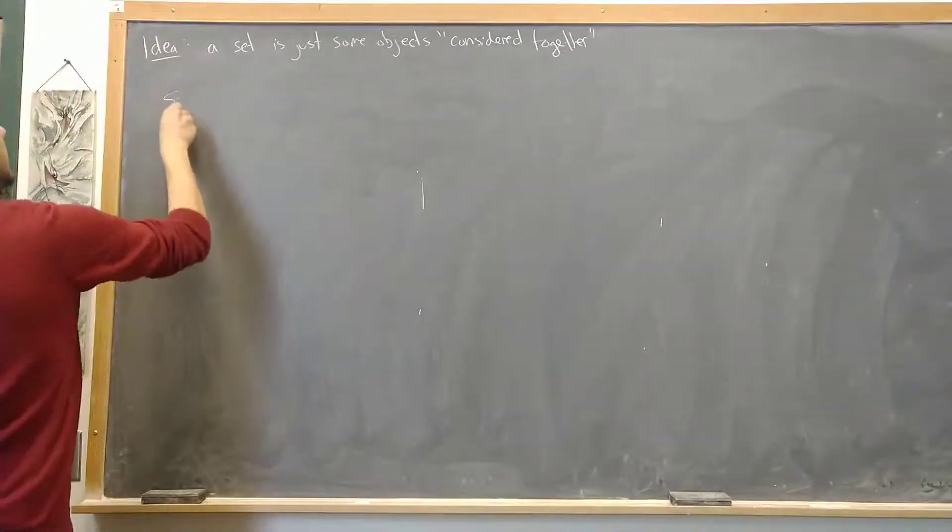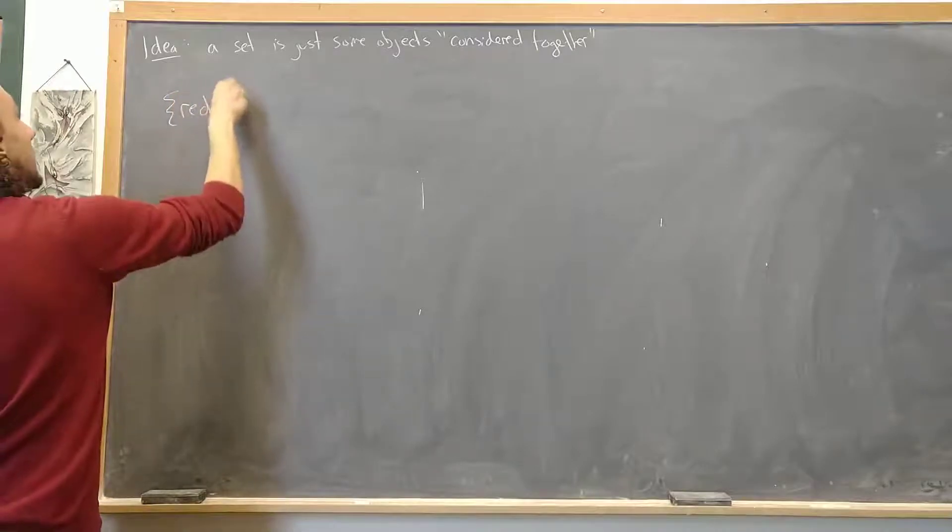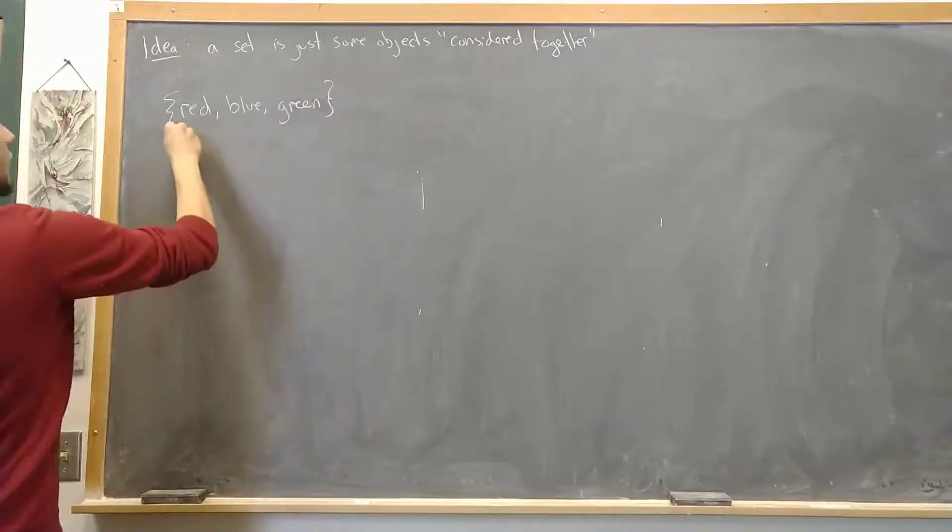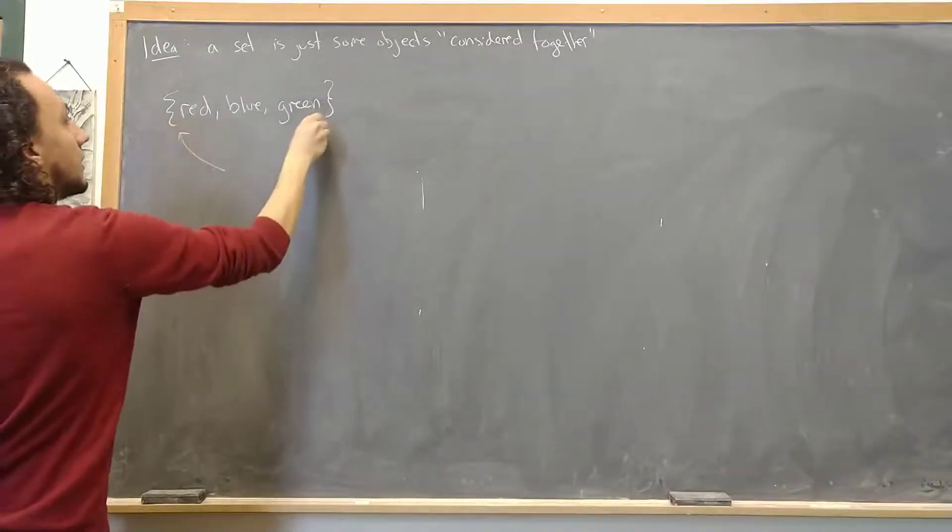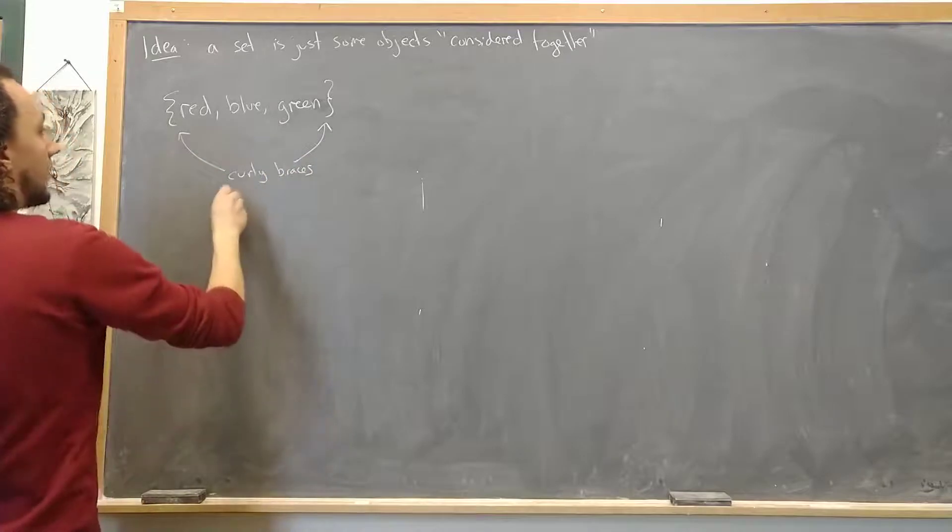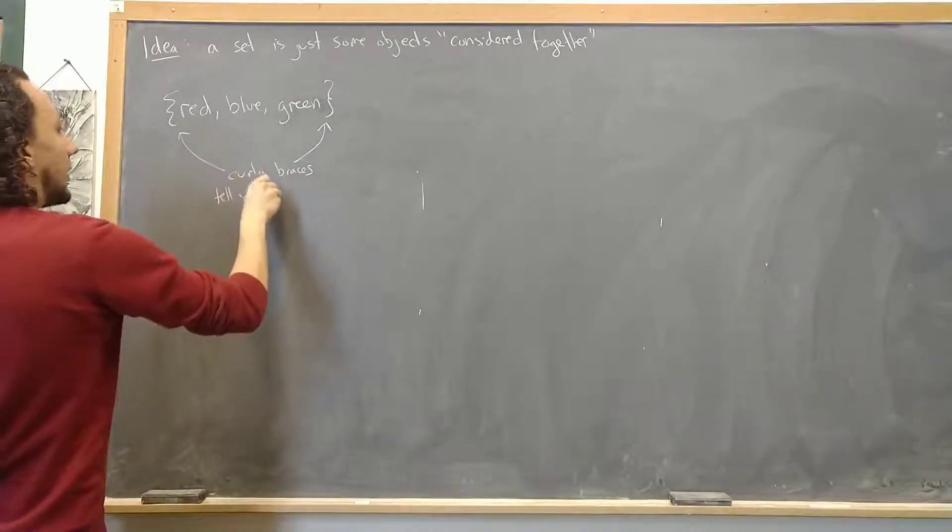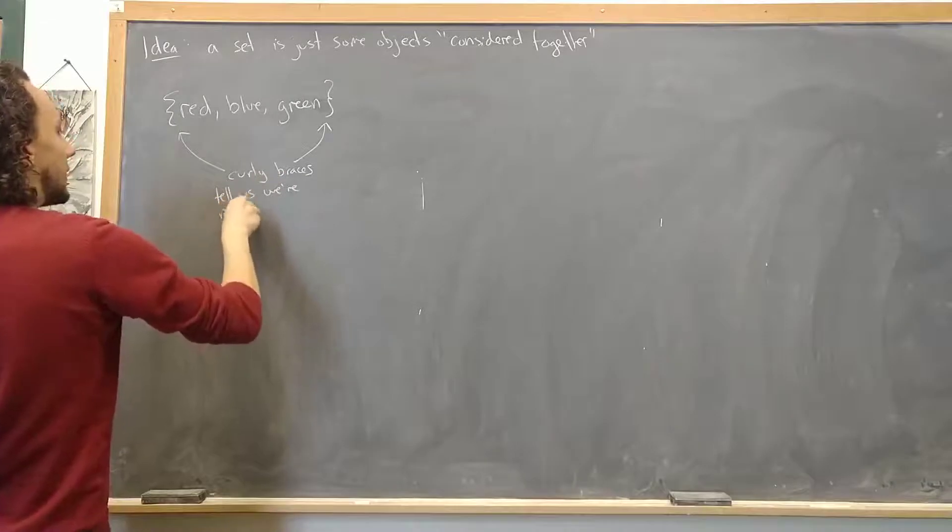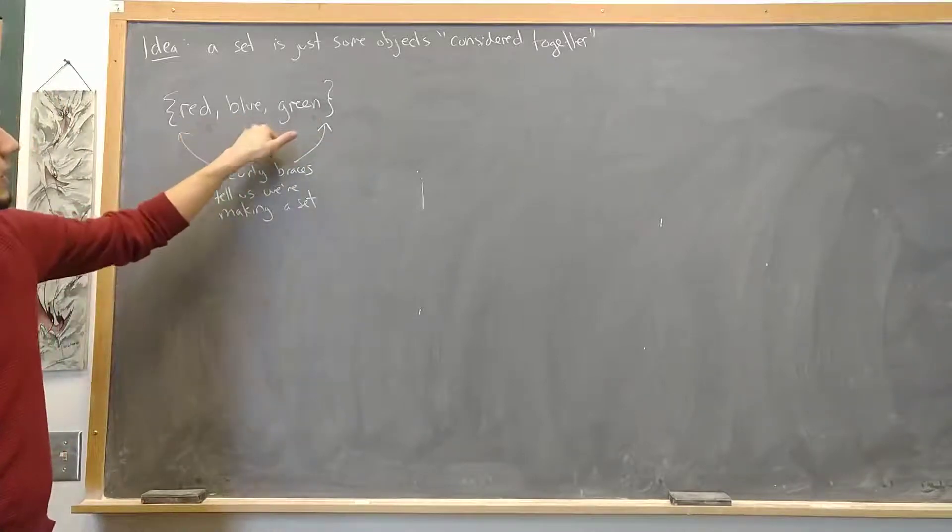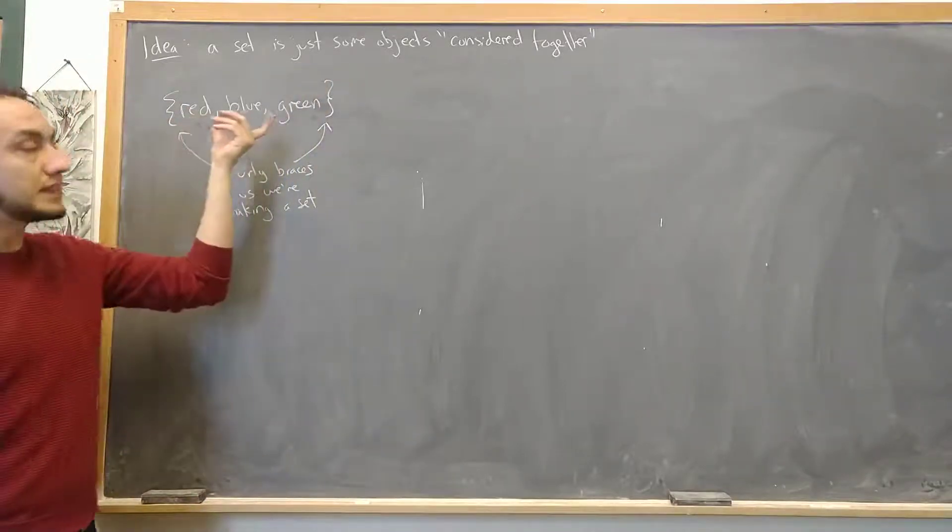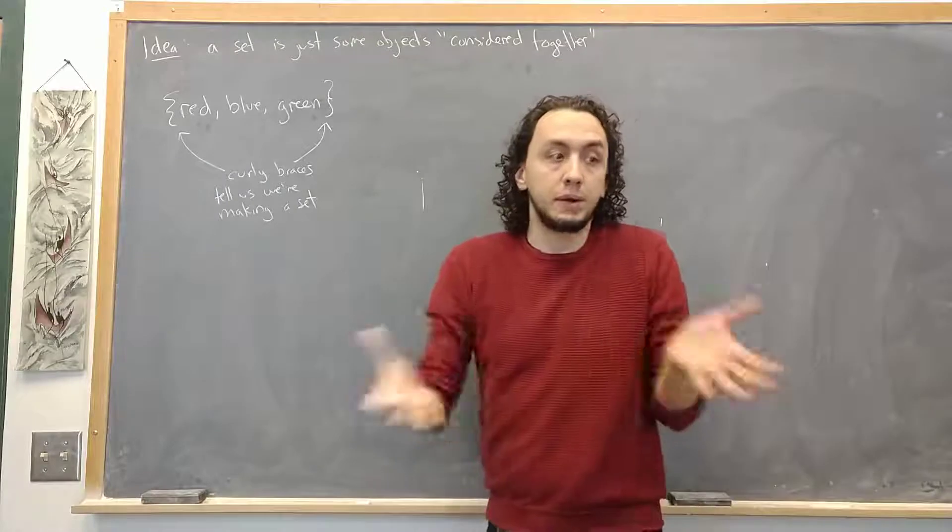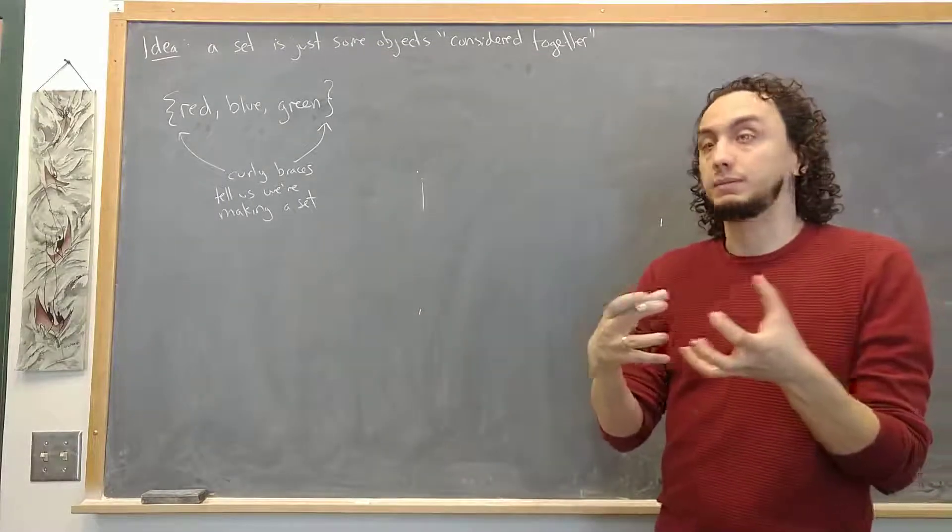So you could have the set that contains the colors red, blue, and green. And here we already have our first bit of notation. These two curly braces tell us we're making a set. So when I put things together, separate them by commas and put curly braces around it, what I mean is the set that contains these three colors. And so all I mean by considering together is just this. I'm putting them together. I want you to think of them as one unit, as a set.